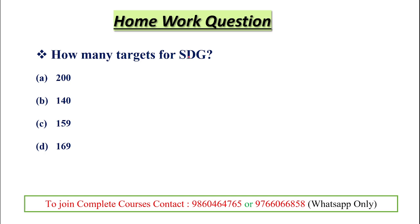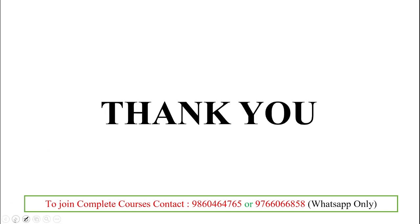For a homework question: How many goals are there for SDG? — 17 goals. Now the question is: how many targets are there for SDG? The options are 200, 140, 159, and 169. You can answer in the comment box. For any queries or doubts regarding this topic, please ask in the comment box and we will resolve them. Thank you and have a nice day!